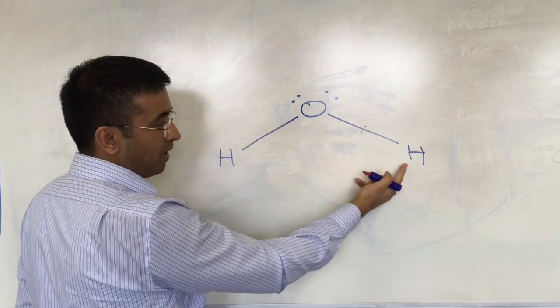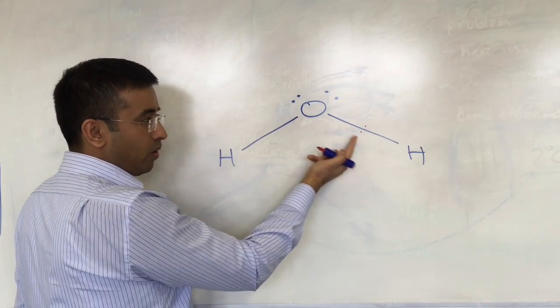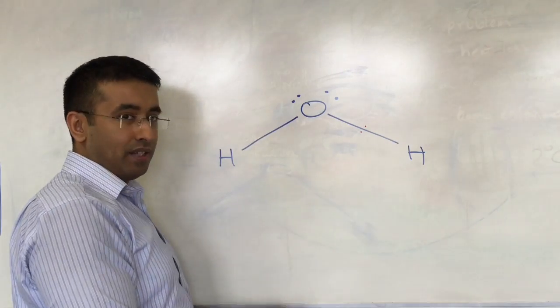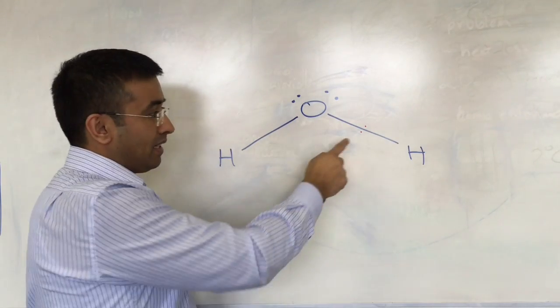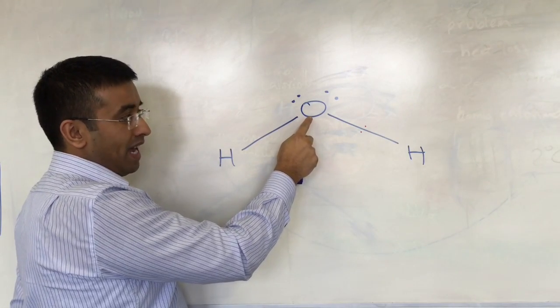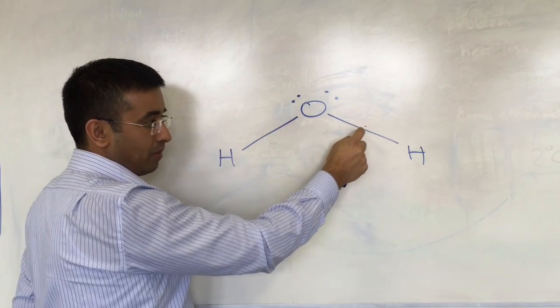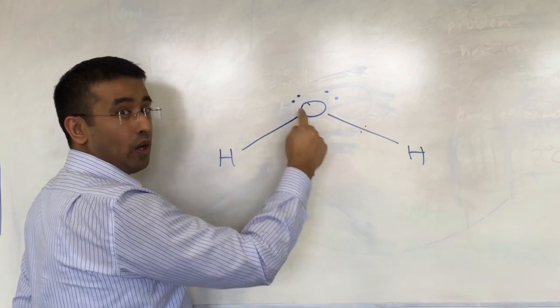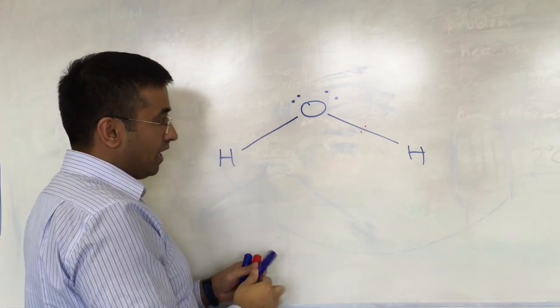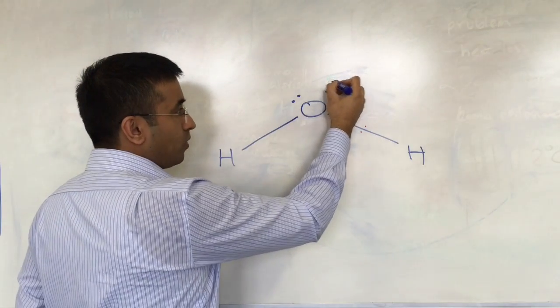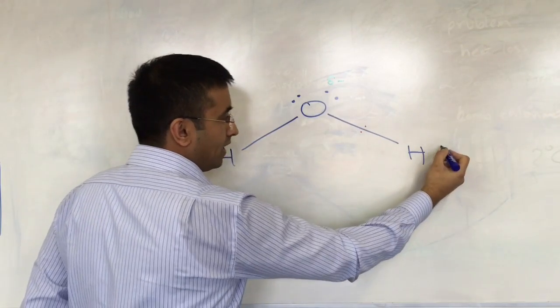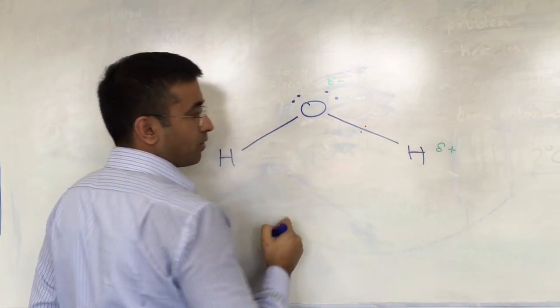Both of them are being shared by hydrogen and oxygen, but the oxygen is more electronegative. Electronegativity is the ability of an atom to attract a pair of electrons in a covalent bond towards itself, giving rise to this being partially negative and this being partially positive.